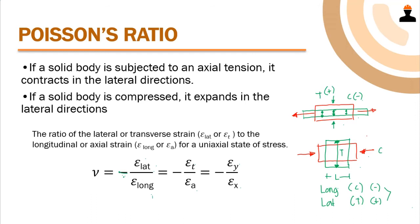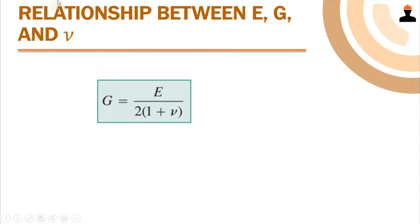Please take note of the behavior of the material under tensile and compressive stress — we have two types of strain: lateral and longitudinal. We also have the relationship between E the modulus of elasticity, G the shear modulus of rigidity, and the Poisson's ratio, given by: G equals E over 2 times (1 plus Poisson's ratio). Kindly memorize and familiarize this formula. Let's now solve a problem using the formulas introduced in this video.